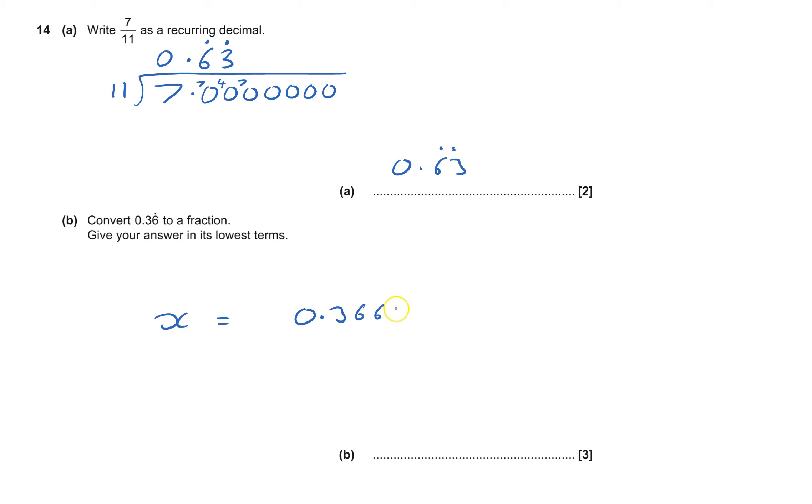What I need to do is do something to this so I get the sixes canceling above each other. I'm going to do 10x - that means I times this by 10 - and that will give me 3.6666 repeating. Now the sixes are above each other, I can actually subtract these.